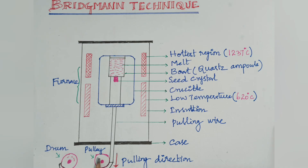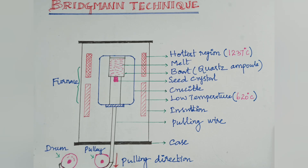The growth is controlled by pulling, and the wire is controlled by the drum. The speed of pulling is controlled depending on the application. If you want a bulk crystal, we have to adjust the speed of the pulling rate. If you want a small crystal, we also adjust the pulling rate accordingly to control the crystal size.